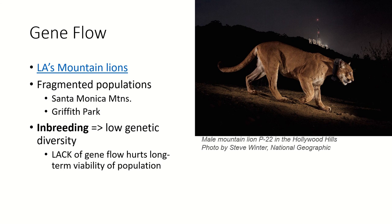So gene flow, genetic drift, and bottlenecks are all things that can work together with natural selection, but they are not part of natural selection. Genetic drift is just chance; gene flow is the movement of alleles, usually with individuals; and bottlenecks are a rapid decline in the number of individuals in a population.